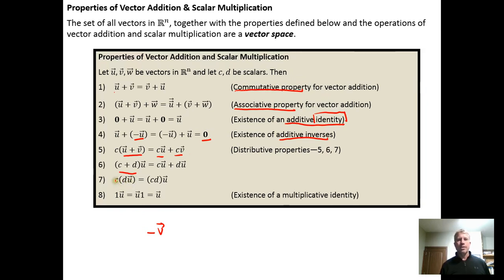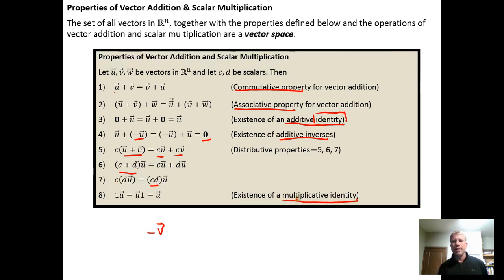If you have a scalar times a vector that's being scaled, you can distribute the scalar into the other scalar. And then there's the existence of a multiplicative identity — the scalar one is the scalar you multiply by a vector to preserve the identity of the vector.